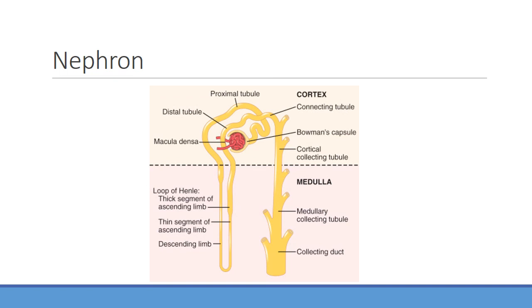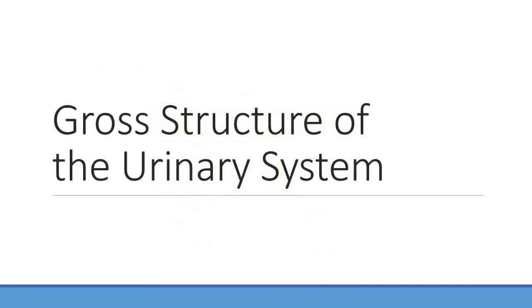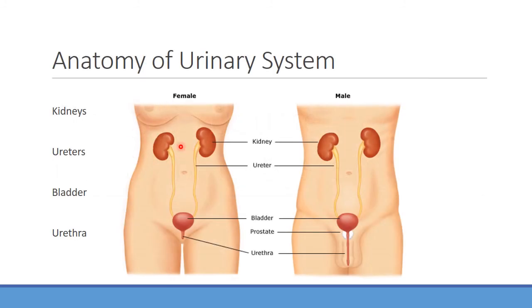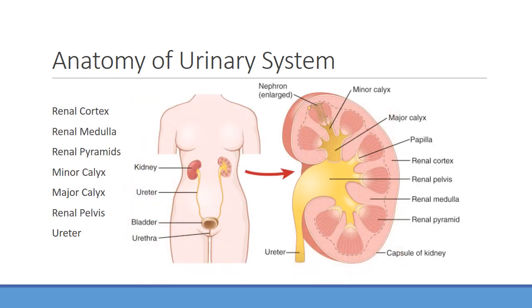The nephron is the main functional unit of the kidney. We'll see how it lies within the kidney and look at different points — things like the proximal and distal convoluted tubule, the loop of Henle — and see how those function distinctly from one another, leading to regulation of electrolyte balance and fluid balance. For the gross structure of the urinary system, everyone should have two kidneys, connected through the ureters down to the bladder and then through the urethra where urine is eliminated.